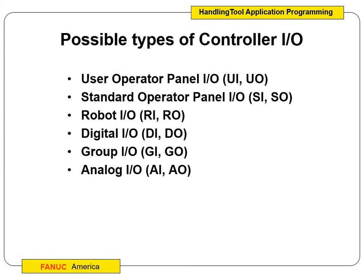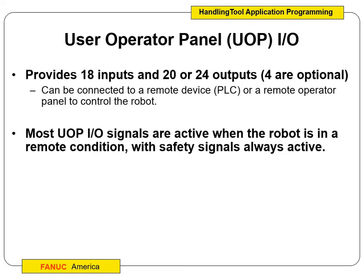They're all kind of right here. When we start talking about things, we're going to talk about the user operator panel I/O. I/O stands for inputs and outputs. So UI and UO is user input, user output. We have our standard operating panel — SI, SO, standard input, standard output. We have robot I/O, so RI and RO. DIDO is digital input and output, group input and output GI/GO, and then analog is AI and AO. It's fairly common sense — a lot of stuff we've dealt with in other classes, just doing control signals.